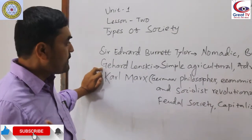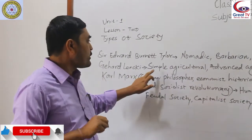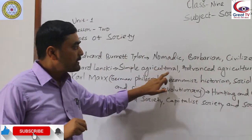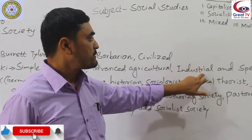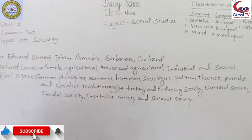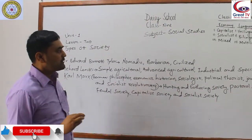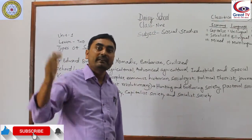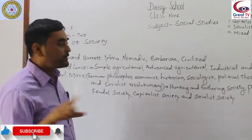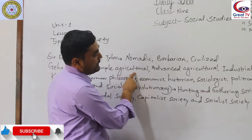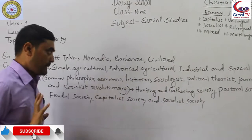Civilized society refers to well-mannered, well-cultured people, well-trained with different social and cultural values, with education being the foundation of such society. Modern society can be given as the example of civilized society. Additionally, society can also be classified as Simple Agricultural Society, Advanced Agricultural Society, Industrial Society, and Special Society. We will further discuss agricultural and industrial society in detail later. For now, just an introduction.